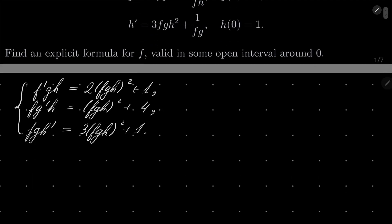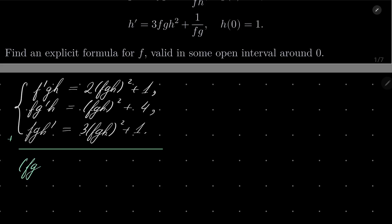What I wish to do is add these equations together. By the very first hint, on the left-hand side we have just the derivative of fgh, and on the right-hand side we have 6fgh² + 6.